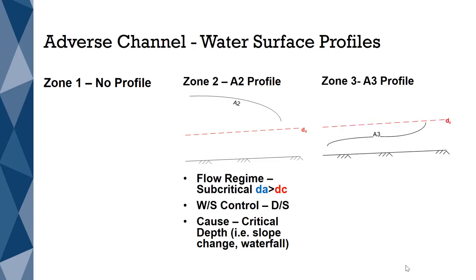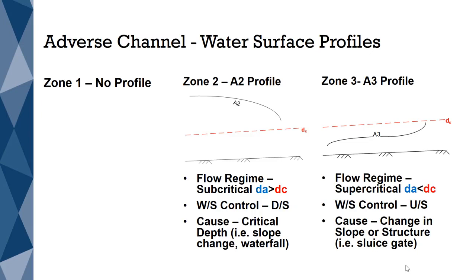An A3 profile — our final profile — is formed in Zone 3, where the flow regime is supercritical. A supercritical flow condition occurs when the actual depth is less than the critical depth. Flows that are supercritical are always controlled upstream. And for an A3 profile to occur, there needs to be something upstream causing the water surface to go below critical. This will occur when there is a slope change.